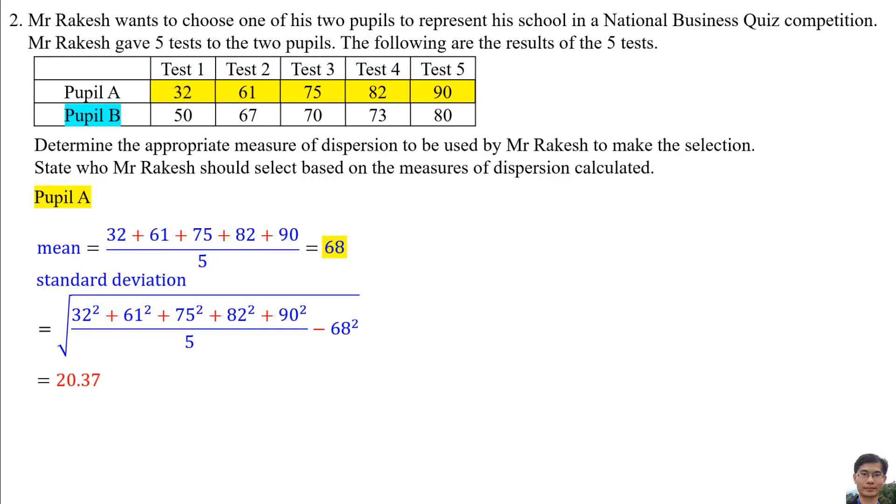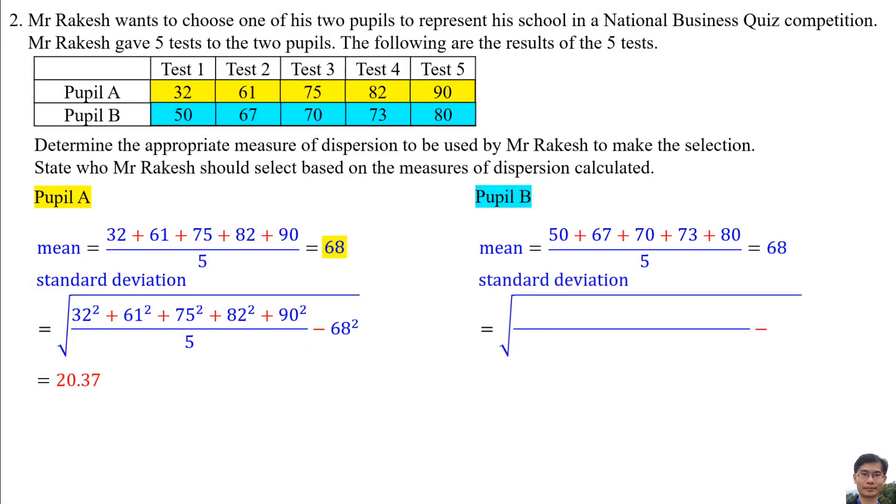Then we find the mean for Pupil B. The mean for Pupil B is equal to the average of scores for all 5 tests. So mean equals 68. Then we find the standard deviation. Still the same formula: square all the scores and divide by 5, and minus mean squared. So we get standard deviation as 9.98.